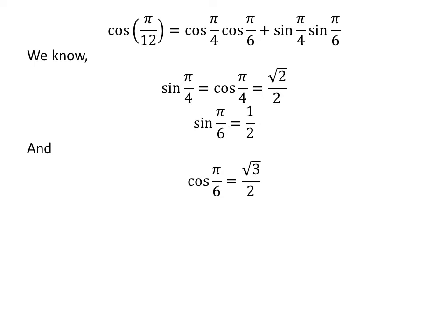We know sine of pi upon 4 is equal to square root of 2 upon 2, and cosine of pi upon 6 is equal to square root of 3 upon 2.